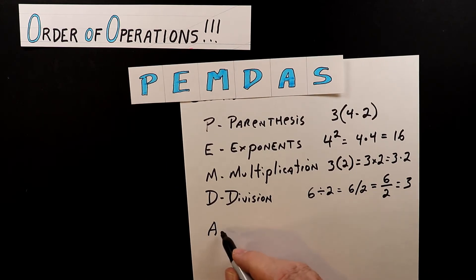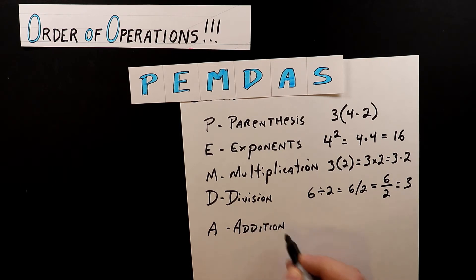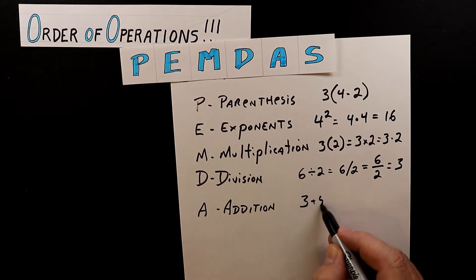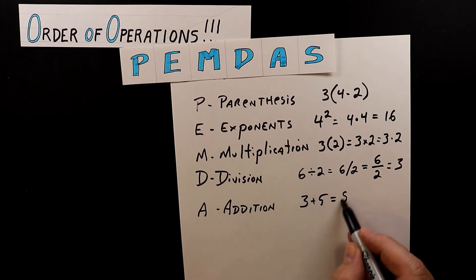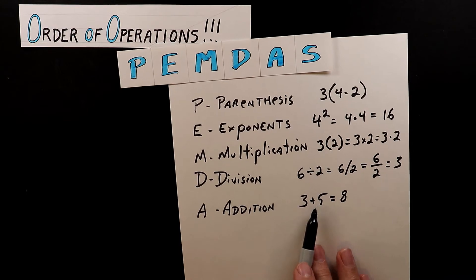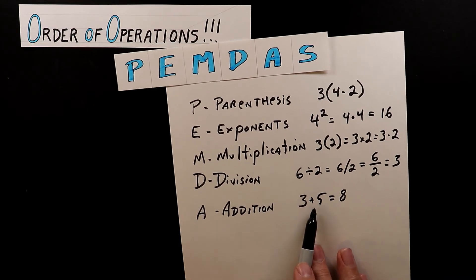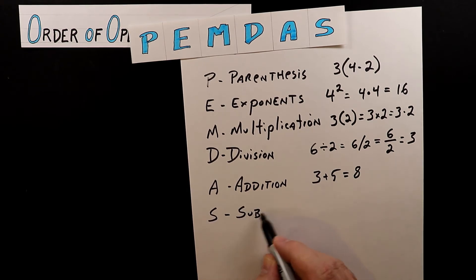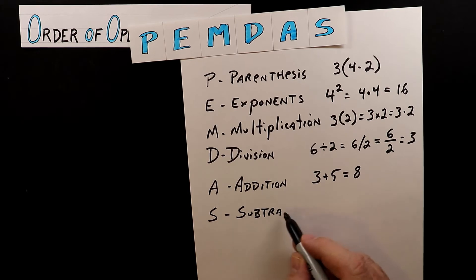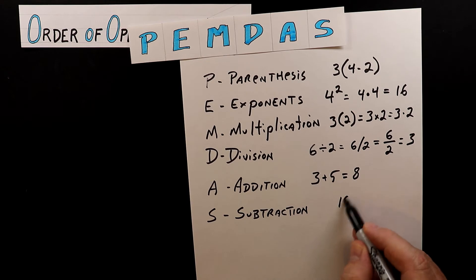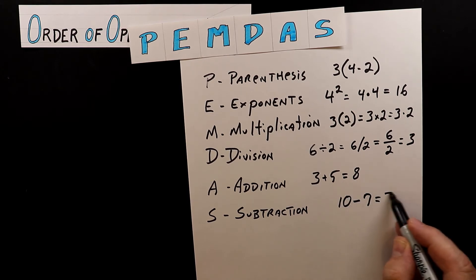Next we have A for addition. The nice thing is that addition doesn't change — for example, three plus five will always equal eight. They don't replace addition in your higher level math classes; there's only one way to show addition. Finally, we have S for subtraction — for example, ten minus seven equals three.